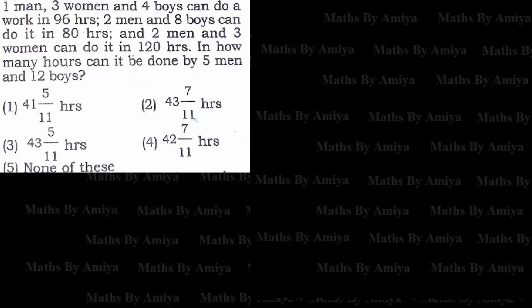Hello friends, let's solve this question. I am writing the equation to show you how to write it. One man, that is, one man plus three women plus four boys can do work in 1 by 96.